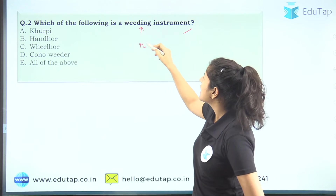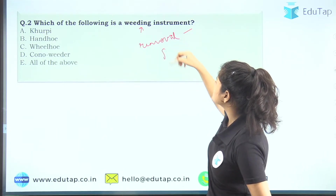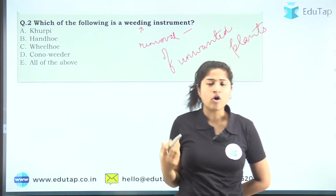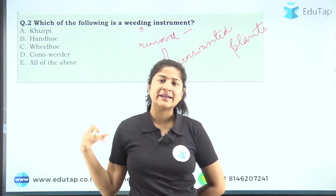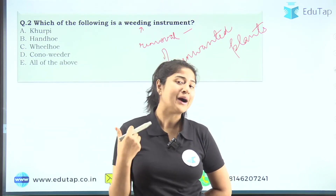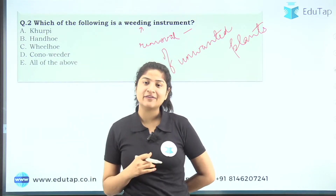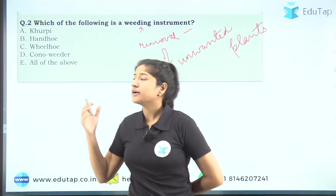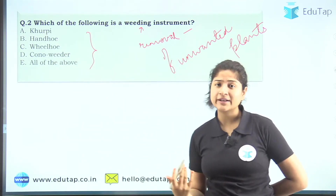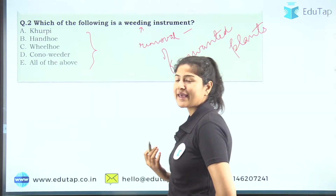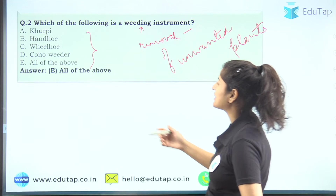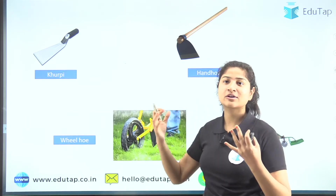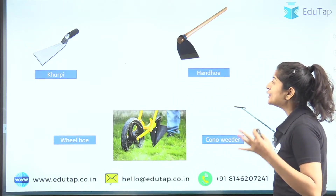Now let's move to question two: which of the following is a weeding instrument? Weeding is the removal of unwanted plants. For example, if you are sowing radish and beetroot grows in between, beetroot is healthy but because you do not want it in that sowing area it becomes an unwanted plant — that is weeding. The correct answer is option E, that is all of the above.